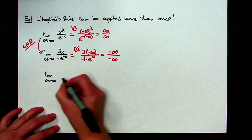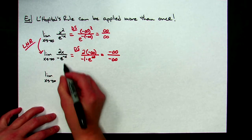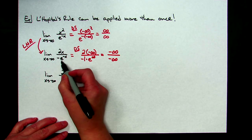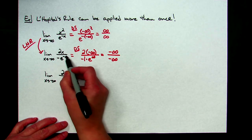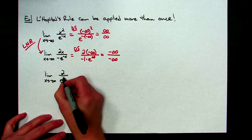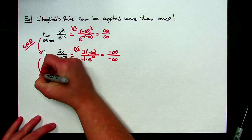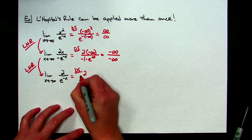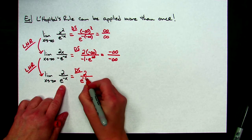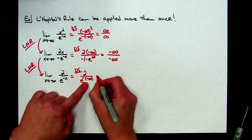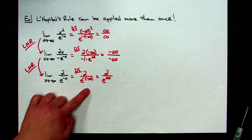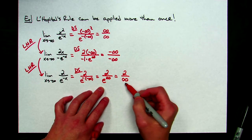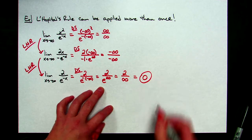Let's try it again. Limit as x approaches negative infinity. Derivative of 2x is 2. Derivative of negative e to the negative x: e to the u times u prime, that negative times the negative already out front gives e to the negative x. So L'Hôpital's Rule a second time gives 2 over e to the negative x. Direct substitution: e to the negative of negative infinity, negative times negative is positive, so e to the positive infinity is getting really, really big. So 2 over infinity goes to 0.